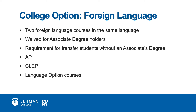Let's break down the college option requirements into further detail. The first part of Lehman's college option is two courses in a foreign language. Specifically, this needs to be a two-course sequence in the same language. While this is the general requirement that applies to most students, there are some important variables that need clarification.